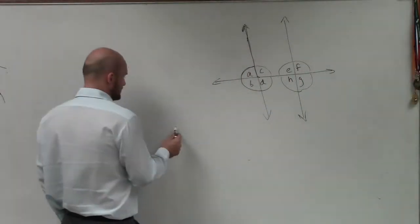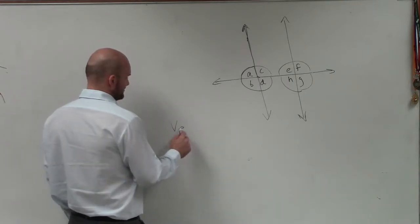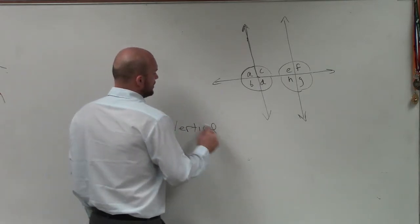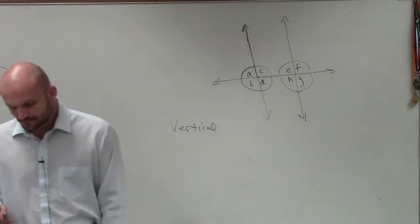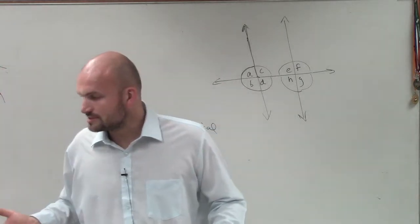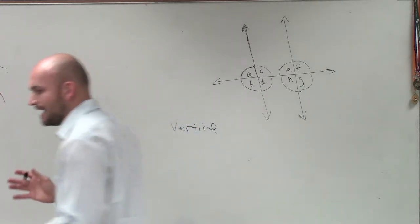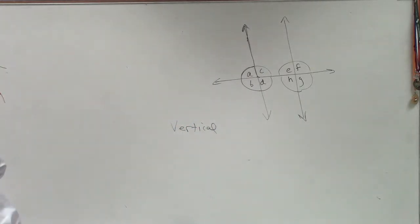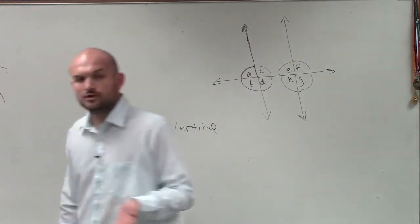Rhymes with vertical, starts with vertical, or starts with a V. Vertical. Now, unlike linear pair, vertical angles are when we have the intersection of two lines. When we have the intersection of two lines, we create two vertical angles.